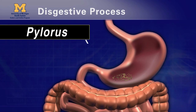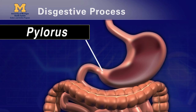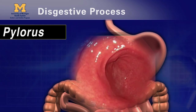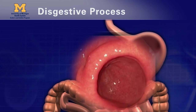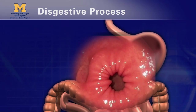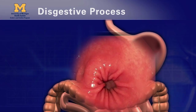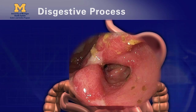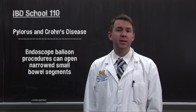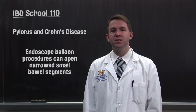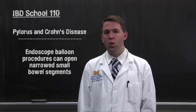The stomach is connected to the small intestine by the pylorus, a muscular valve or gate. The pylorus slowly opens and closes to make sure just the right amount of contents move into the small intestine. If the pylorus is scarred by Crohn's disease, it can prevent food from passing to the intestine, leading to nausea and vomiting after eating. Severe narrowing can sometimes be opened using a balloon through an endoscope, and sometimes requires surgery.